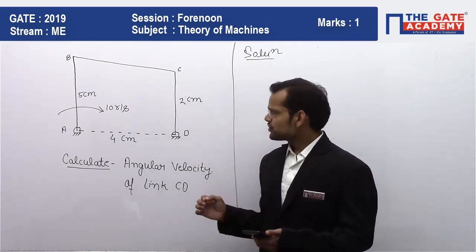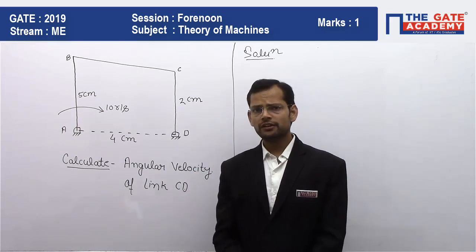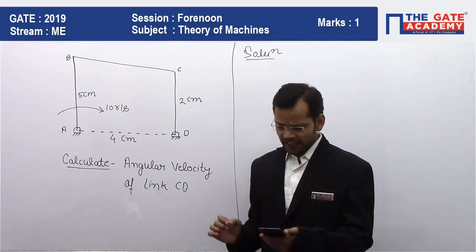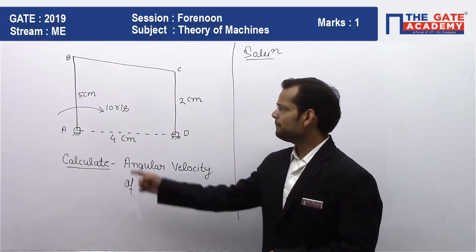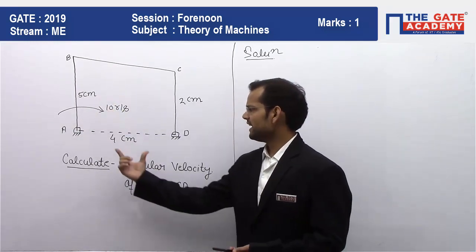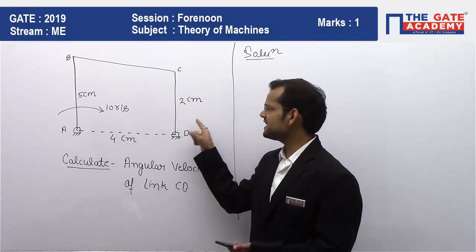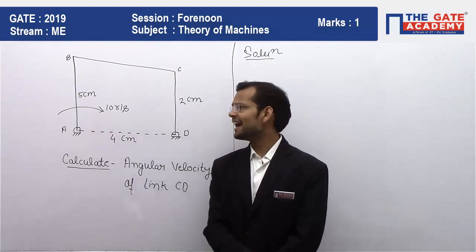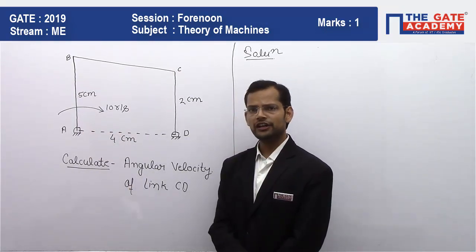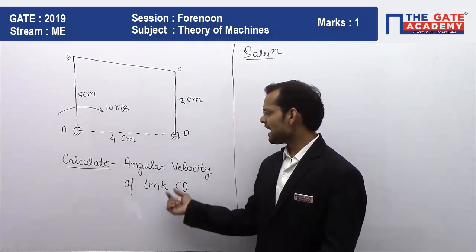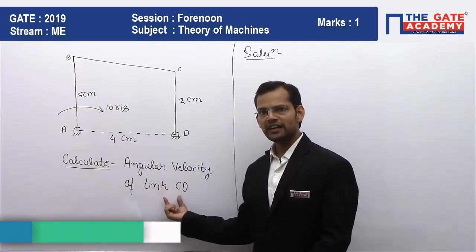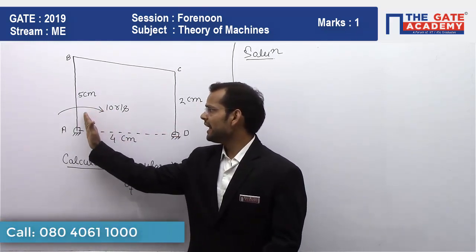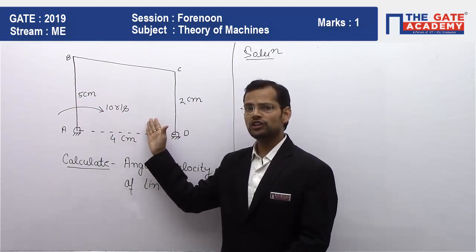mechanism. This question was asked in GATE 2019 in the forenoon session for one mark. The question was framed like this: In a four-bar mechanism, AB equals 5 centimeters, AD equals 4 centimeters, and CD equals 2 centimeters. If link AB is rotated at 10 radians per second in the clockwise direction, then what will be the angular velocity of link CD at this particular instant when AB and CD are parallel to each other and perpendicular to AD?